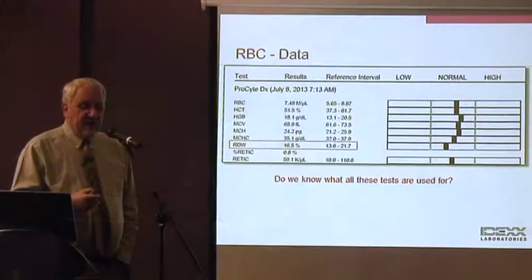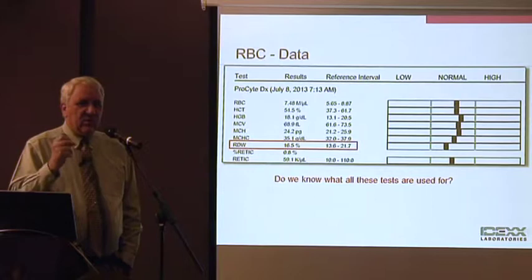If you go to the data set, and I'll stick with the red cells for a little while here, we give you a lot of parameters. I'm sure everybody here knows what an RDW is, right? Just nod your head yes. I'm going to ask you that with the polling question here in a second. So do we really know what an RDW is?